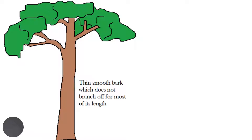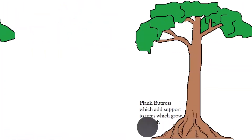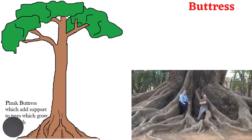Trees have slender trunks with thin, smooth bark. In climates where rainfall is low, trees adapt by having thick barks. However, in the equatorial climate where water is abundant, the barks are thin. Trees do not branch off except at high levels where they can make use of the sunlight. It is also common to see flowers and fruits growing directly from the trunks and branches of trees, and not just from their twigs. Trees also develop a wide root system known as a buttress root, which is able to support the weight of the tall and heavy trees in the rainforest.